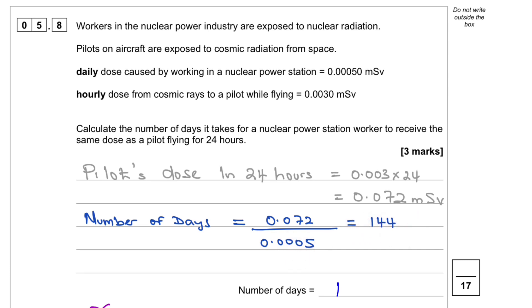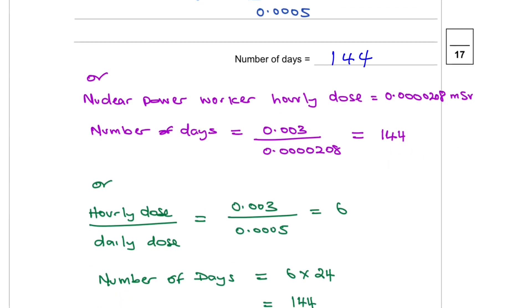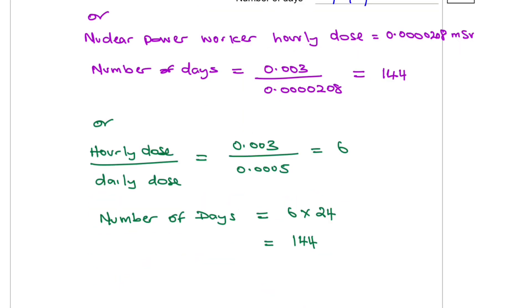So we would write here 144 days. You could also do the same question using the nuclear power worker or the ratio of hourly dose over daily dose. And that would be 6. And then you want to times 6 by 24 to get 144 days.